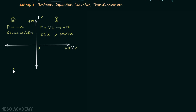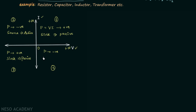In the third quadrant, current is negative and voltage is also negative, so power is positive; therefore the element acts as a sink and is a passive element. In the fourth quadrant, voltage is positive but current is negative, so power is negative; hence the element acts as a source and is an active element.